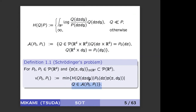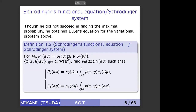In his paper, Schrödinger didn't solve this program, but he gave an Euler equation for it. When I was a graduate student, I learned the name of this equation: the Schrödinger function equation. In Japan this name is popular, but I think 'Schrödinger system' is more popular in Europe. Anyway, it's not me who coined this name — I was just taught it.